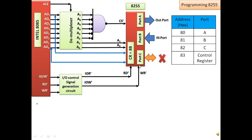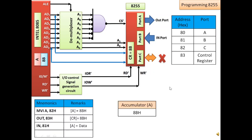Once the control word is written into the control register of 8255, the information inside the control word programs the 8255 as desired. In our case, Port A is programmed as output port, Port B as input port, in mode 0 (basic IO operation). Now we need to read the content of the input port into the accumulator using IN 81, which reads the content available at Port B into the accumulator.